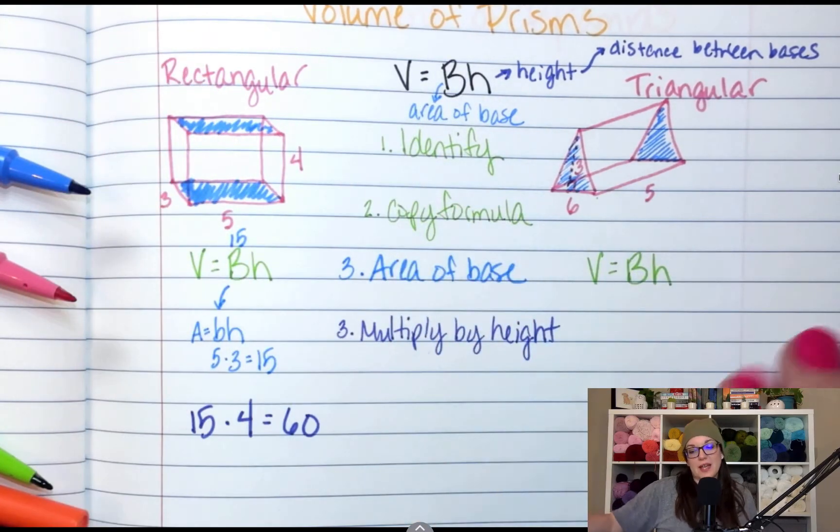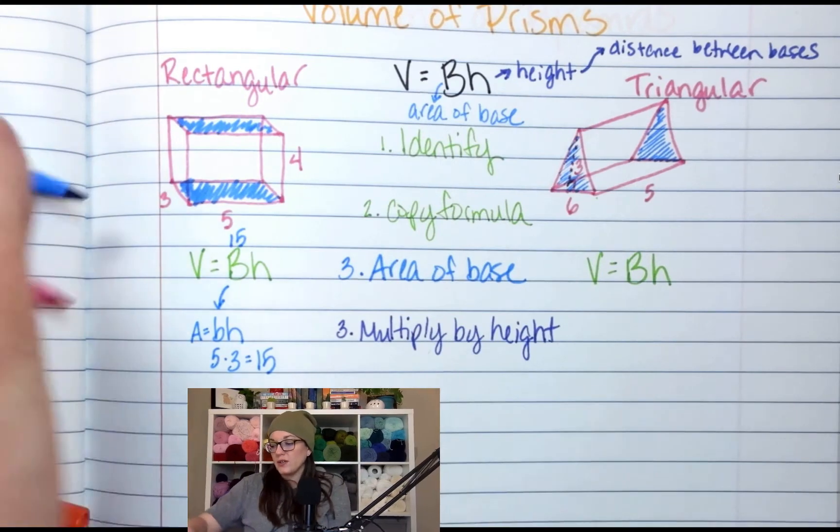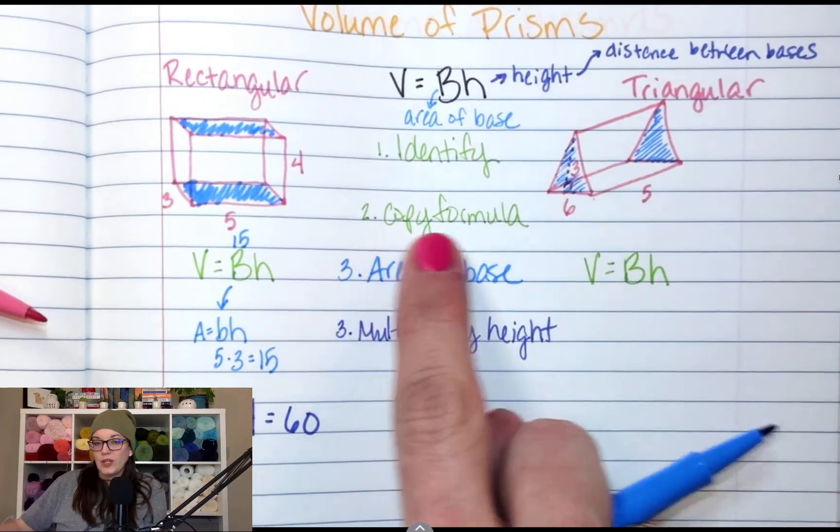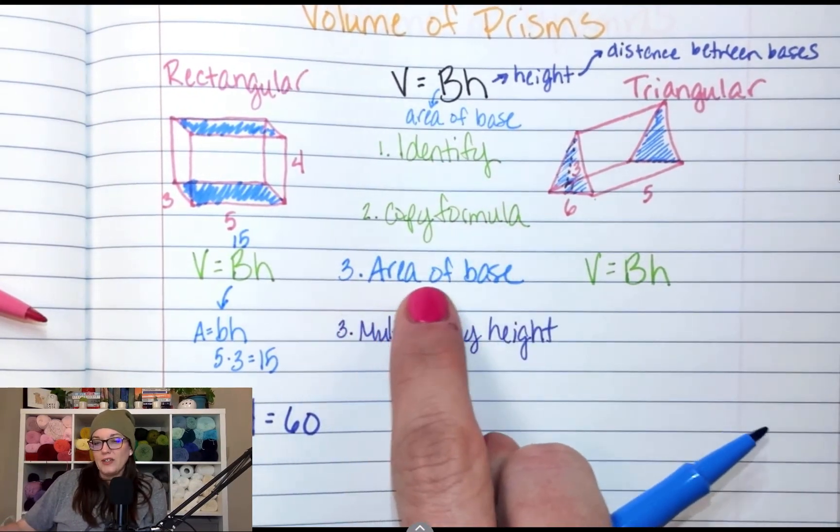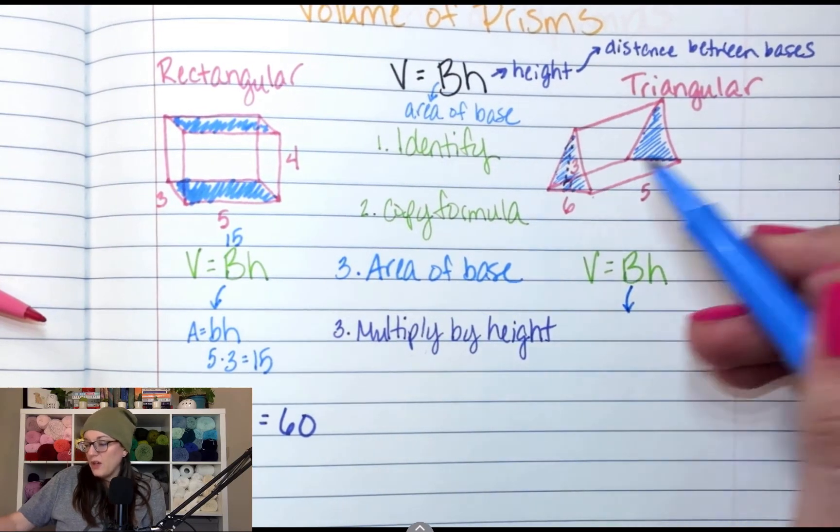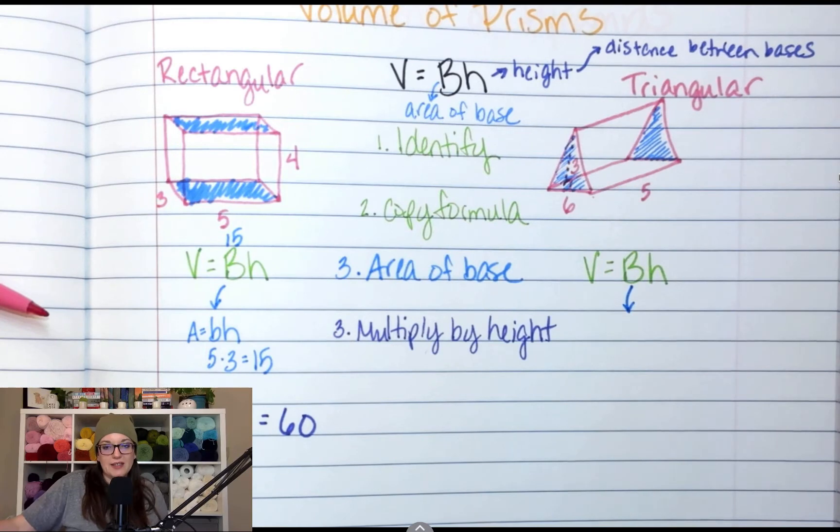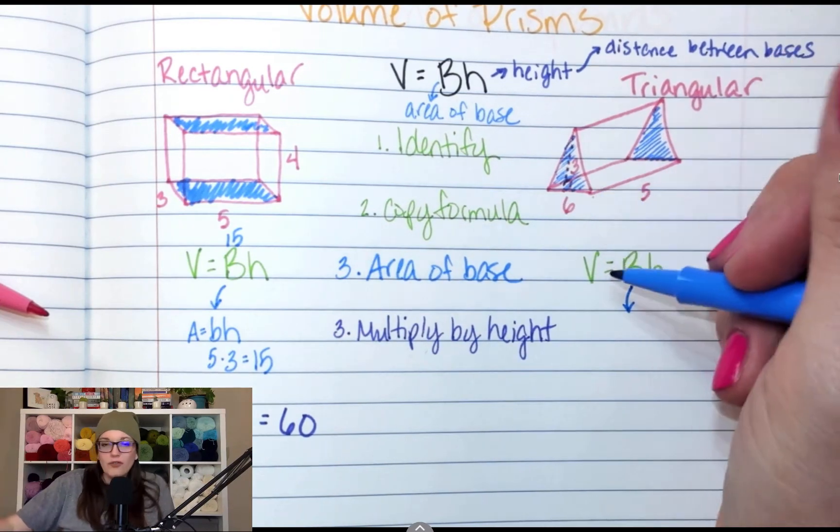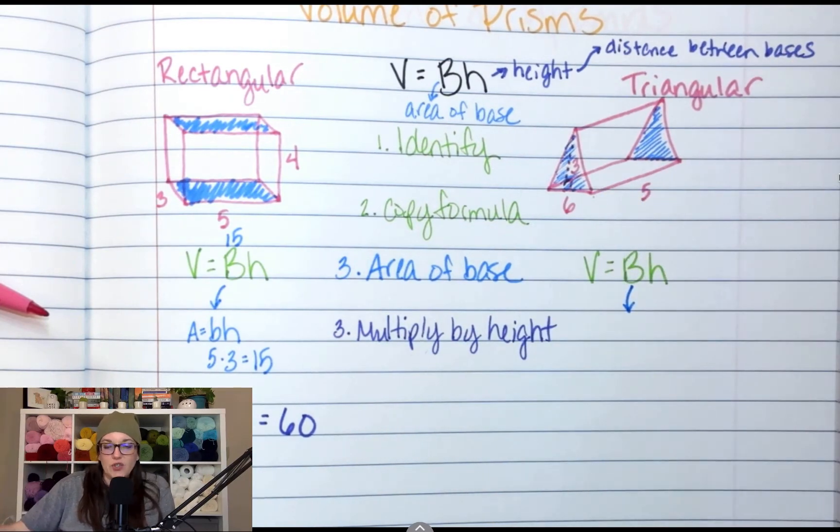Now let's repeat these steps with our triangle. So we left off after we copied the formula. Now we need to find area of the base. So we've got base, capital B. Which shape is the base? It's triangle. I'm going to ask this multiple times because everybody always forgets. How do you find area of a triangle?